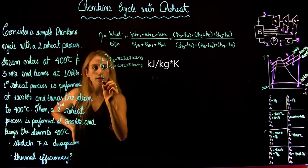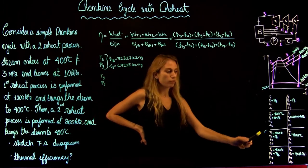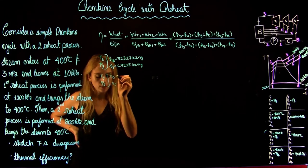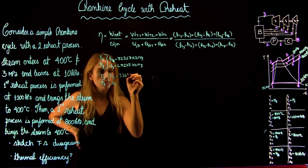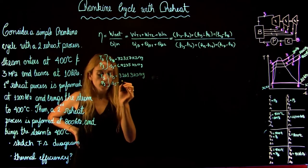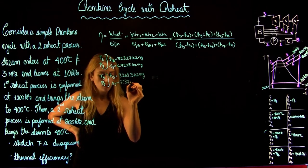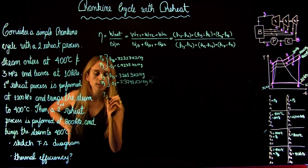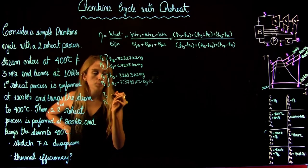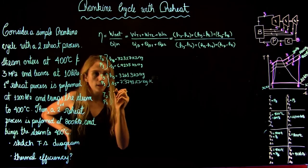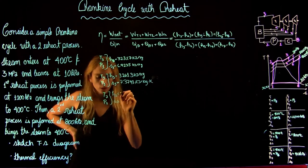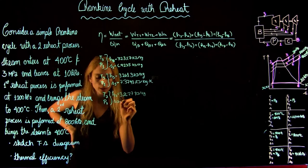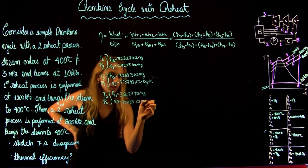At state five, temperature is 400°C and pressure is 1200 kPa. From the tables, H5 is 3261.3 kJ/kg and S5 is 7.3793 kJ/(kg·K). At state seven, temperature is 400°C and pressure is 800 kPa (0.8 MPa). From the tables, H7 is 3267.7 kJ/kg and S7 is 7.5735 kJ/(kg·K).